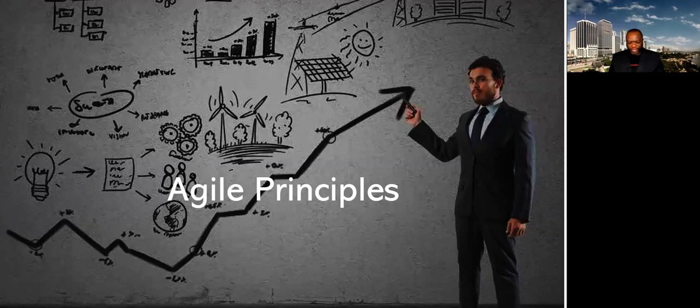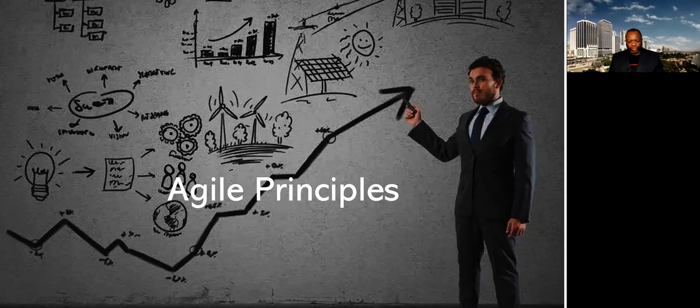Six, the most efficient and effective method of conveying information to and within a development team is face-to-face conversation. Seven, working software is the primary measure of progress. Eight, agile processes promote sustainable development. Note the word constant pace indefinitely. Nine, continuous attention to technical excellence and good design enhances agility. Ten, simplicity, the art of maximizing the amount of work not done is essential. Eleven, the best architectures, requirements, and designs emerge from self-organizing teams. And twelve, at regular intervals, the team reflects on how to become more effective, then tunes and adjusts its behavior accordingly.